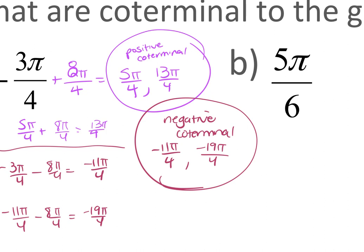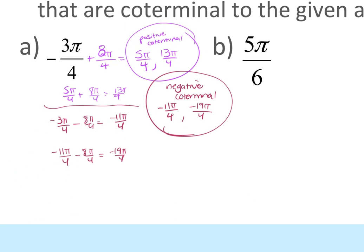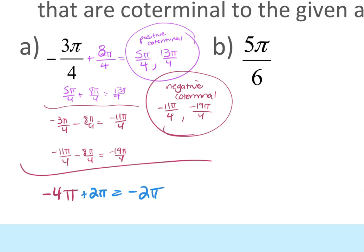Listen carefully: your negatives have to be negative and your positives have to be positive. If the initial angle is negative 4π and I want a positive coterminal angle, I add 2π — but it's still negative, so that's not a positive coterminal angle. I have to keep adding 2π until it becomes positive. Zero can be considered both. You don't have to subtract to get negative or add to get positive — if you add and still get a negative, that's still a negative coterminal angle. Keep adding until it becomes positive.